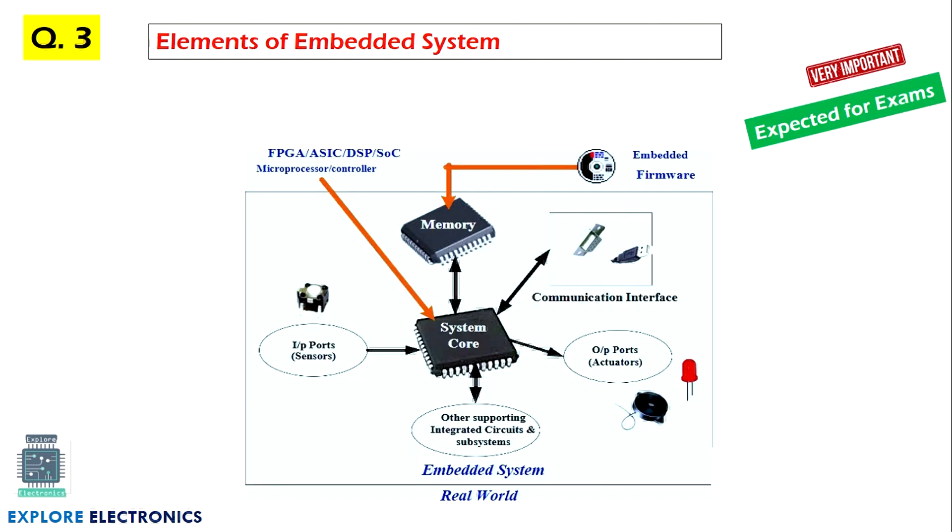And then elements of embedded system. Here this block diagram is very important for exam. We can expect this time in examination to write the elements of embedded system. A system core, it can be a microcontroller or microprocessor or any FPGA or ASIC, and it will be connected with the memory and some communication interfaces are there. And output ports like actuators, input ports will be sensors, and other supporting integrated circuits will be there. And this will be an embedded firmware which will be loaded on the memory. This much you need to write. This question may come for six or eight marks.